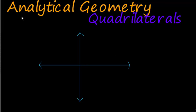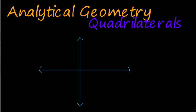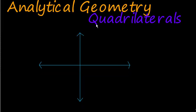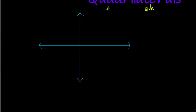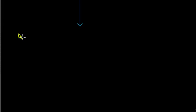Hi and welcome to another math lesson on analytical geometry. We're looking at quadrilaterals. A quadrilateral is a four-sided figure — 'quad' means four and 'lateral' means sides. Quadrilaterals are four-sided figures and we're going to look at three types.